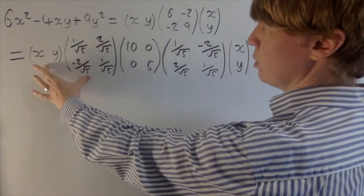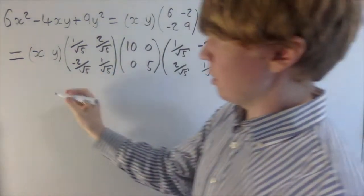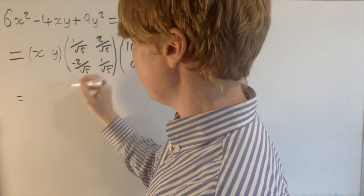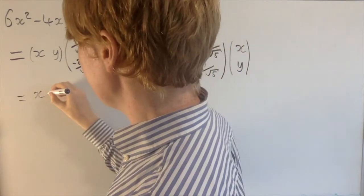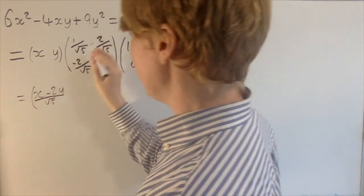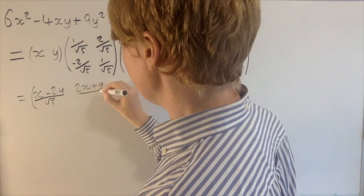What we're going to do next is multiply these two together, multiply these two together, and then this will give us a nice new expression. So when you multiply by this first column, you'll get x minus 2y over root 5. And then multiply by the second column, you'll get 2x plus y over root 5.